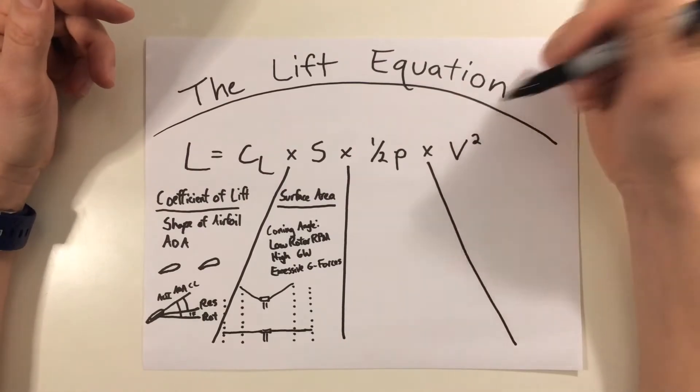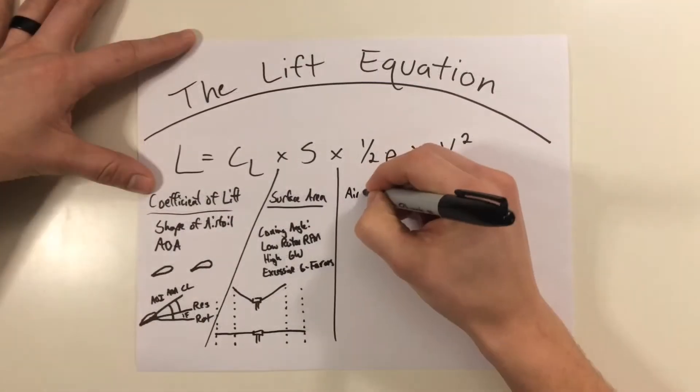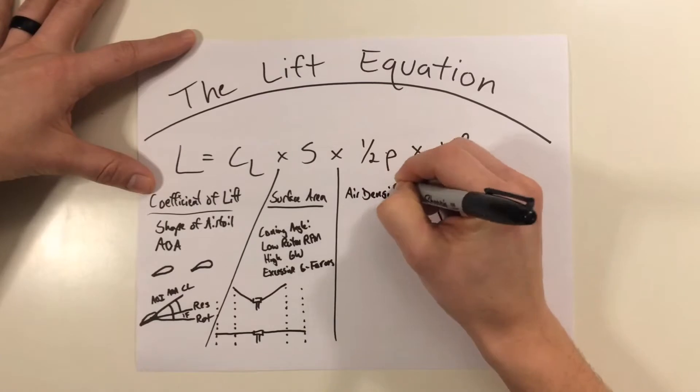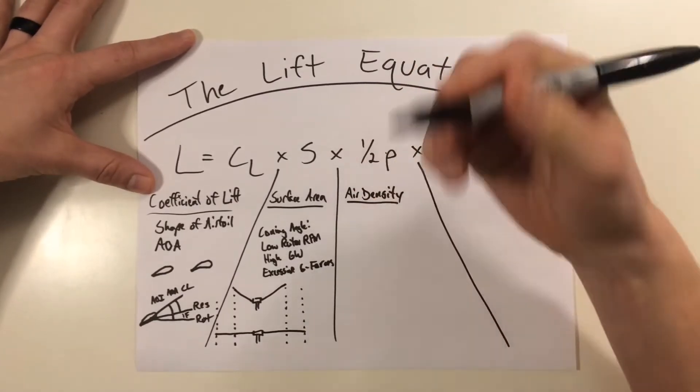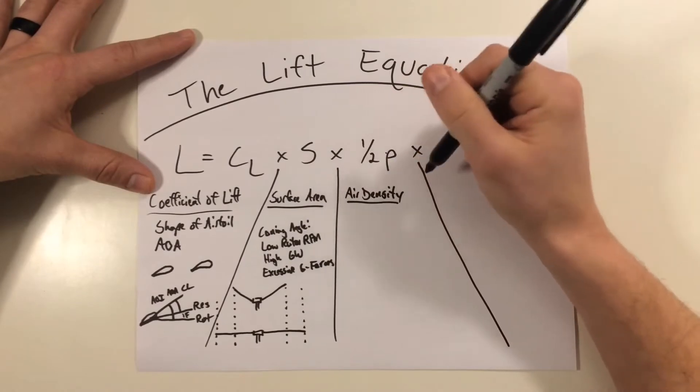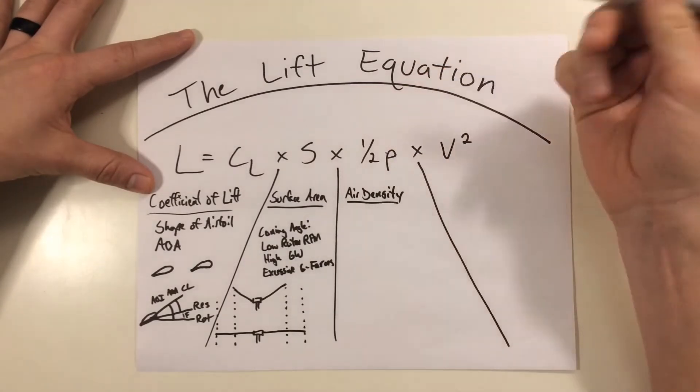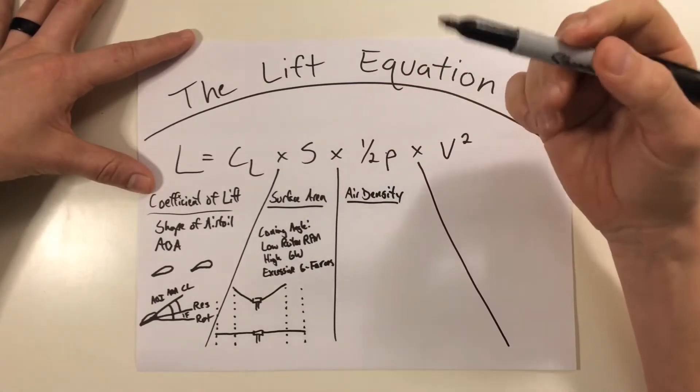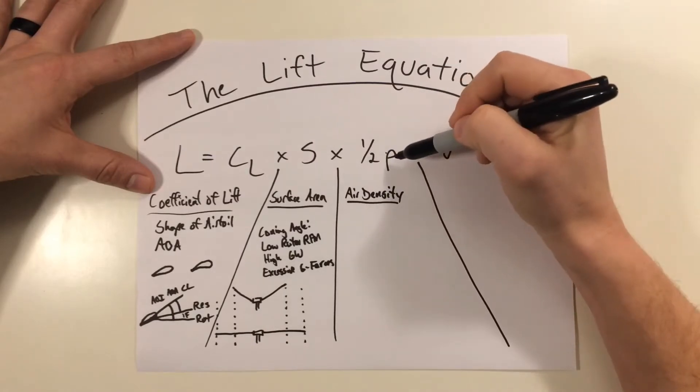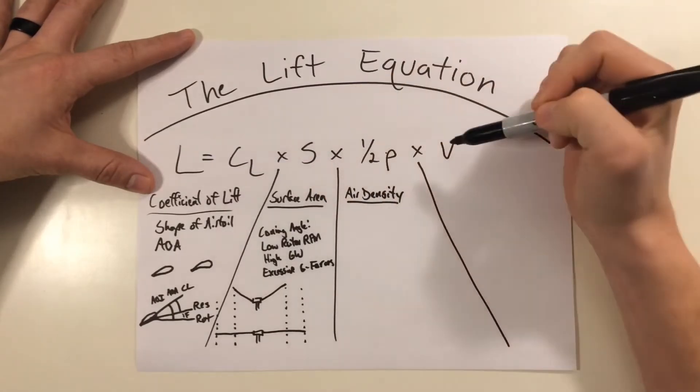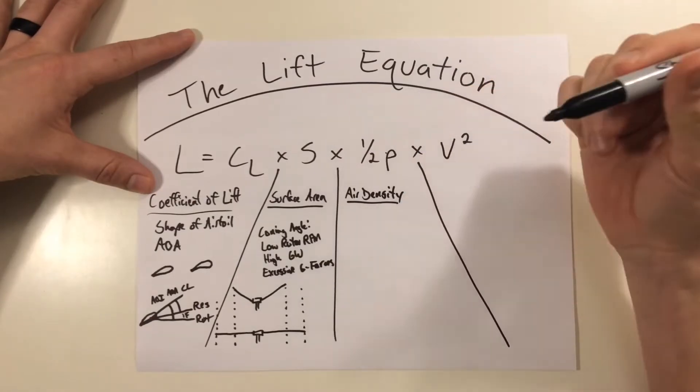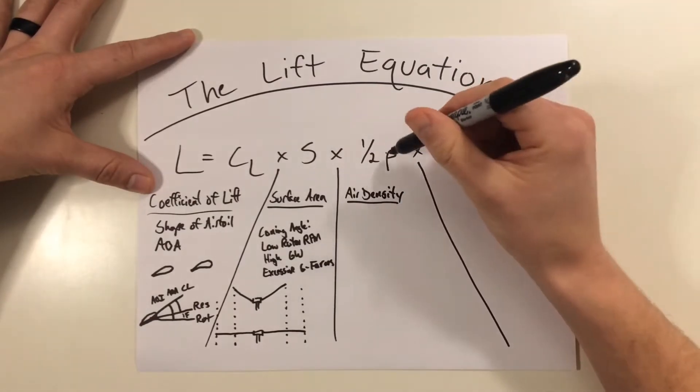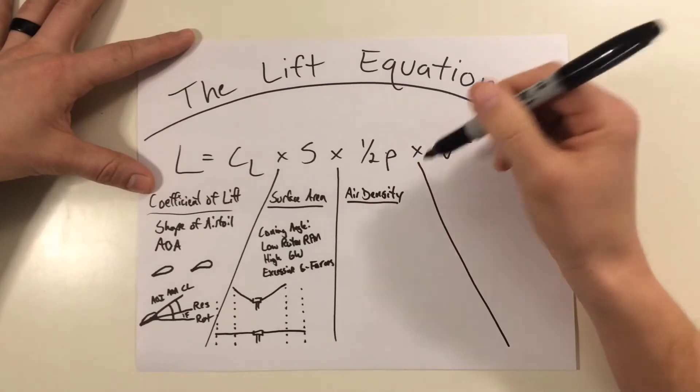So let's get started with air density. When we talk air density, the formula uses one half ρ. It's a Greek symbol, this lower case ρ right here. And all you math nuts may notice that this part of the formula has one half ρ. Well the one half could technically be located anywhere in the formula and still makes sense. But I'll explain why it's typically found or paired up with ρ in the lift equation a little bit later.